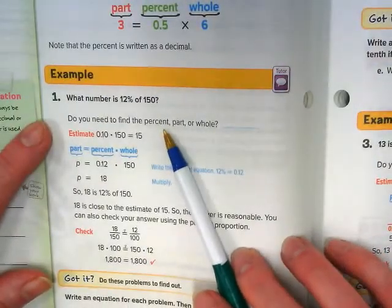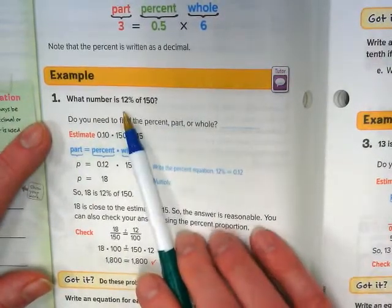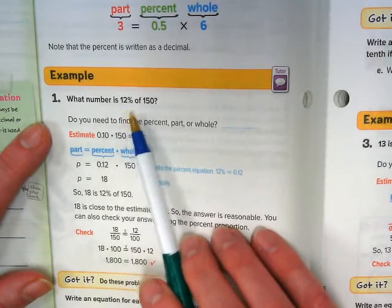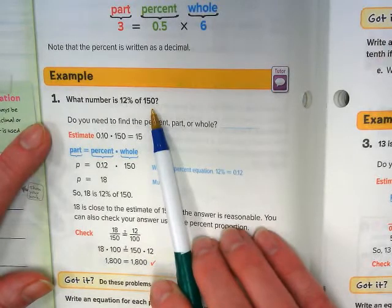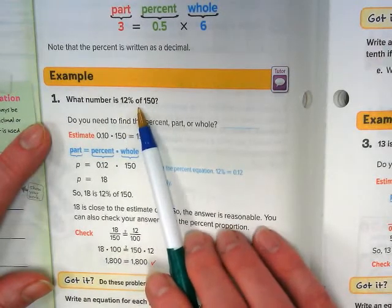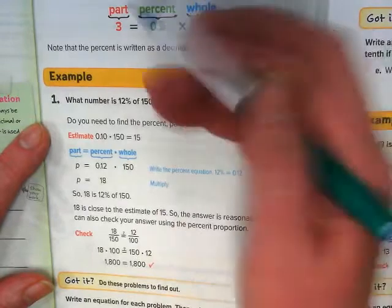So since we're not setting up a proportion, we couldn't do 12 over 100. This is 12% of 150. Again, that of is giving us an idea of whether we're looking for the part or the whole.